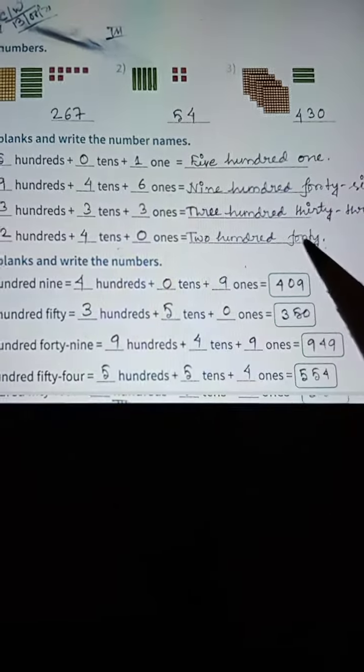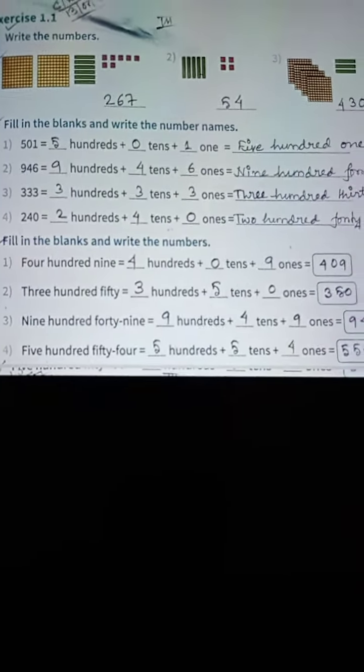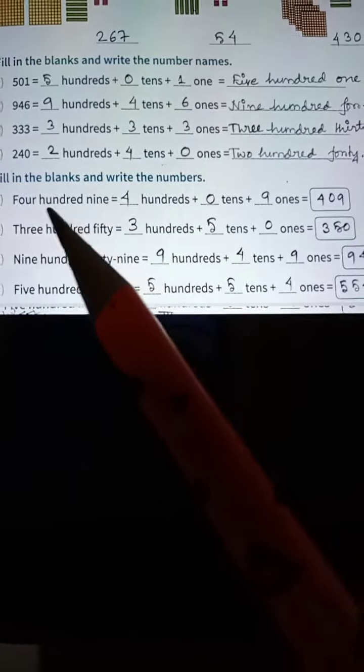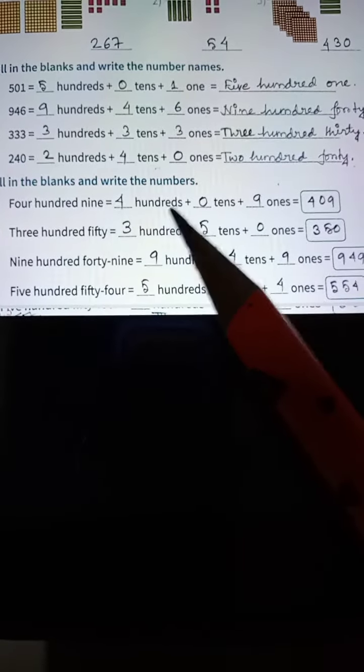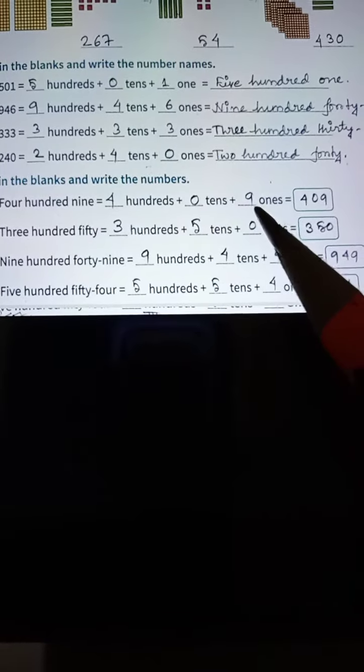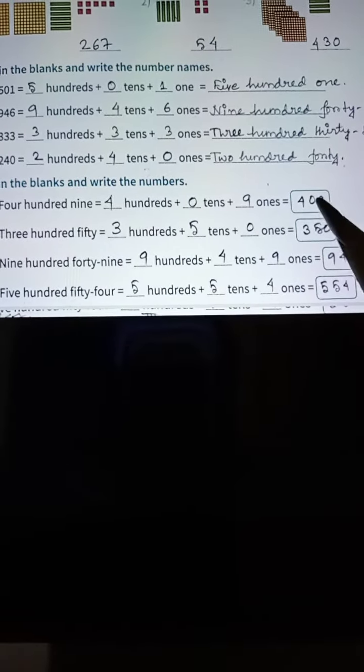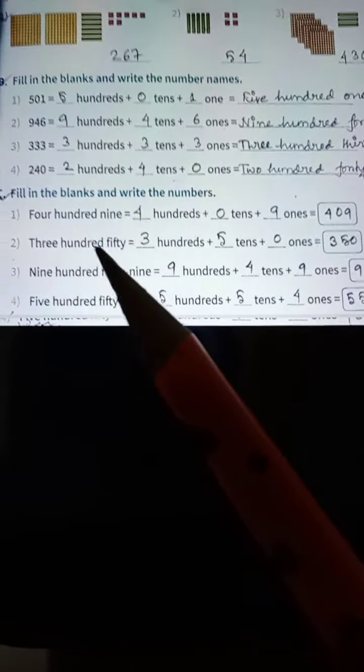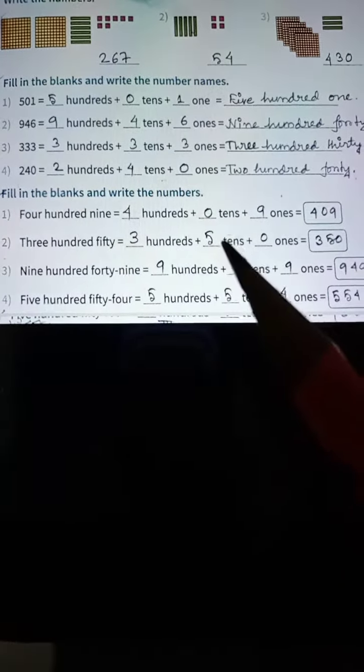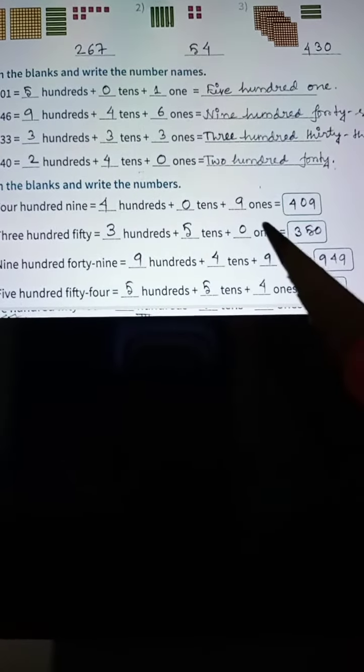Next one, fill in the blanks and write the numbers. Four hundred nine, so 4 hundreds, 0 tens, plus 9 ones, so four hundred nine. 350, 3 hundreds plus 5 tens plus 0 ones, 350.